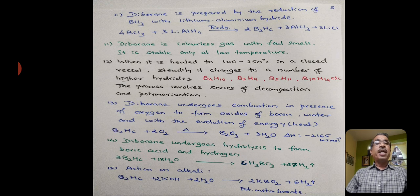Diborane can also be prepared by the reduction of boron trichloride with lithium aluminum hydride. Lithium aluminum hydride is a very good reducing agent. Therefore, it reduces boron trichloride to B2H6.